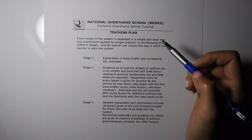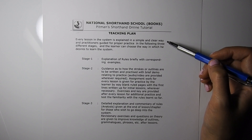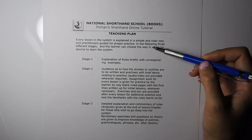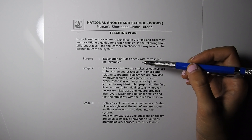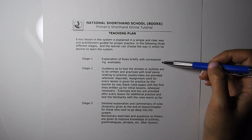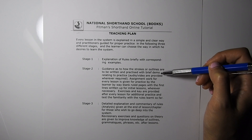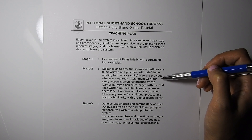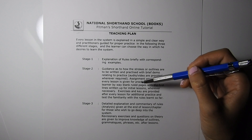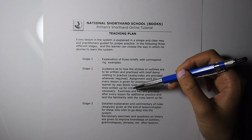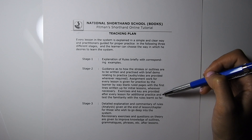Page six: the teaching plan. Every lesson in the system is explained in a simple and clear way, and the learner is guided through three different stages. Stage one: explaining the rules briefly with corresponding examples. Stage two: guidance as to how the strokes or outlines are to be written and practiced, with brief demo, and audio or video provided wherever required. Assignment work for every lesson is given for practice, with blank ruled pages and first lines written up for initial lessons. Exercises and key are provided after every lesson for additional practice.